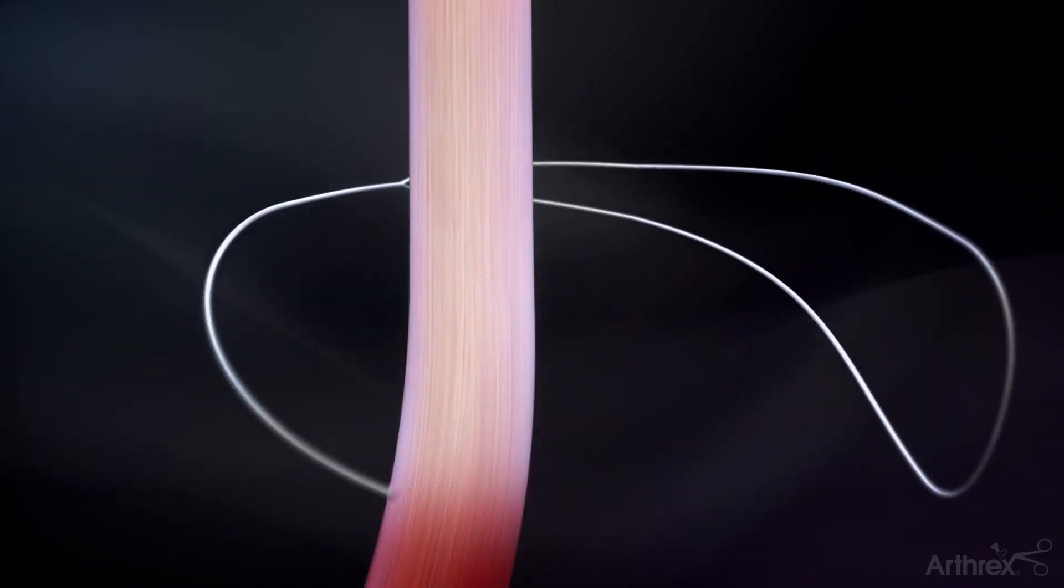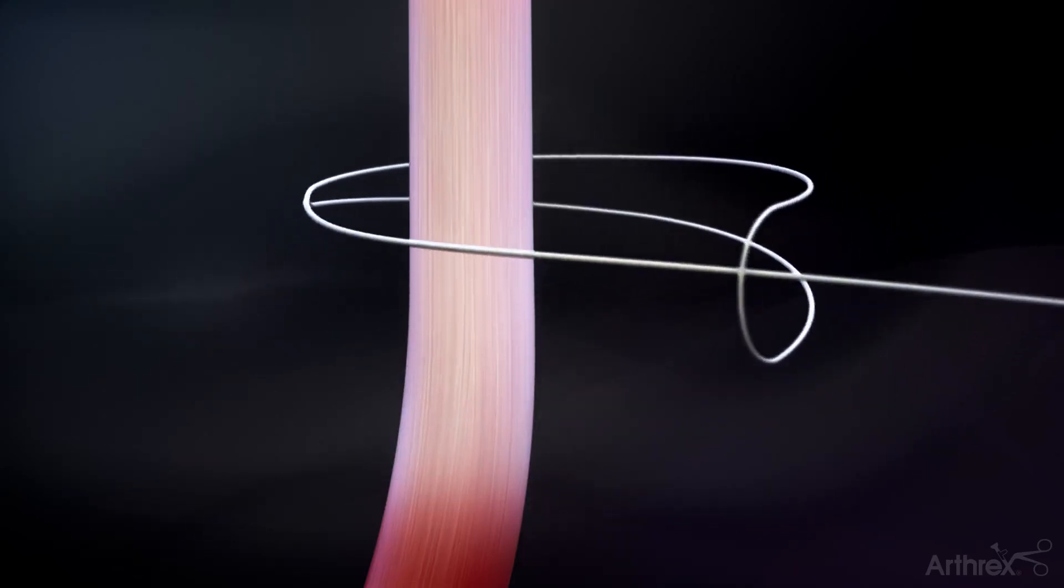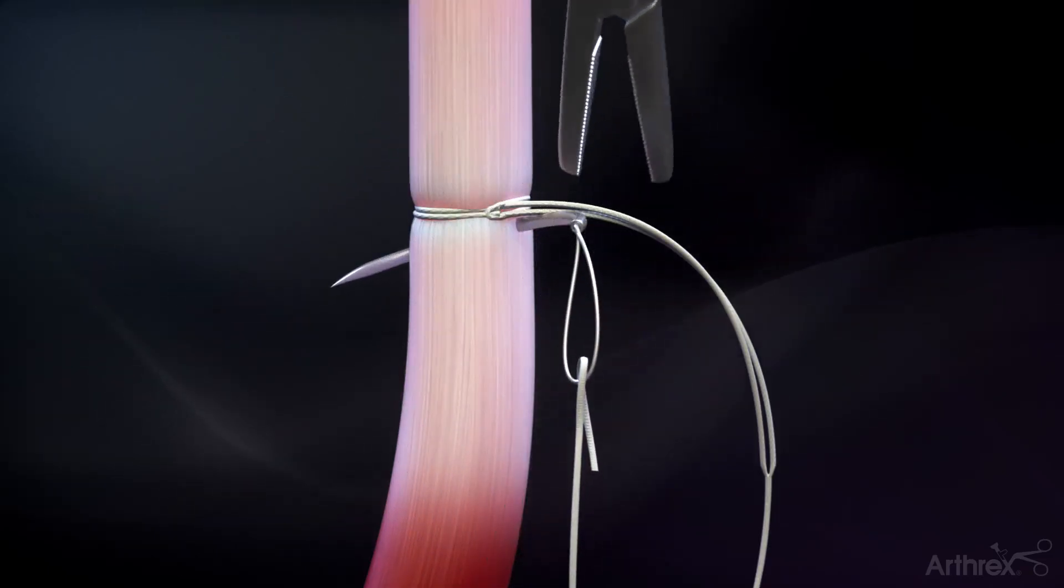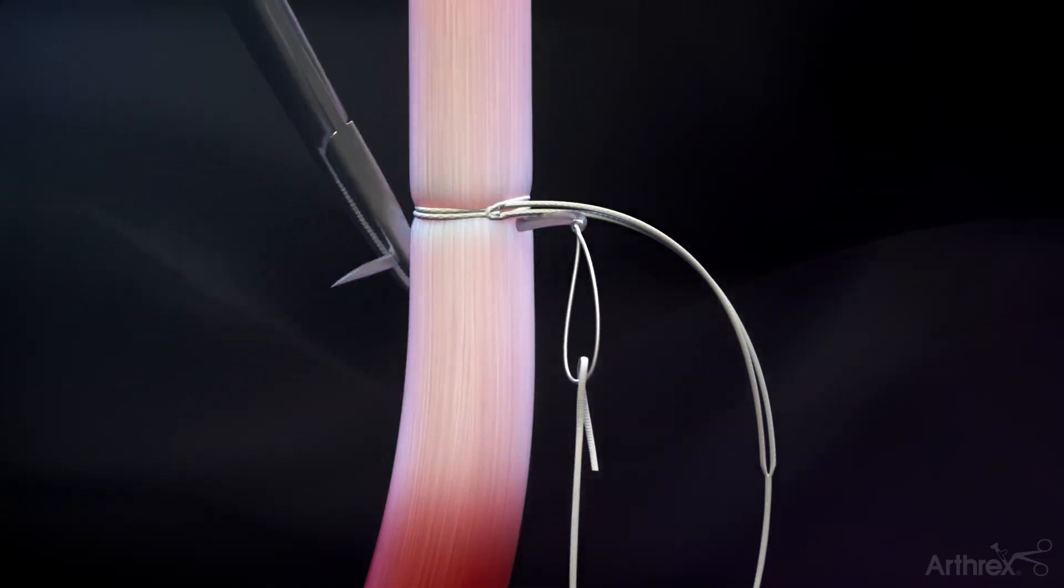Create a loop and tack whip stitch by cinching the No. 5 fiber link around the tendon, approximately 2 centimeters from the musculotendinous junction, and then passing the tail through the tendon, distal to the loop.